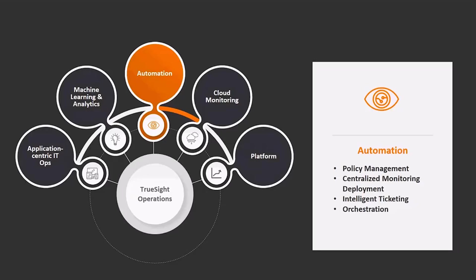From an orchestration perspective, the ability to connect IT operations to the service desk through intelligent ticketing is a key automation capability. Instead of simply opening an incident for every event, we provide the ability to open intelligent incidents that can be prioritized and routed automatically based on business relevance. Lastly, complex orchestration can be accomplished with an out-of-the-box integration to BMC Atrium Orchestrator — from simple activities such as restarting a service to complex activities such as provisioning additional capacity, all automatically.